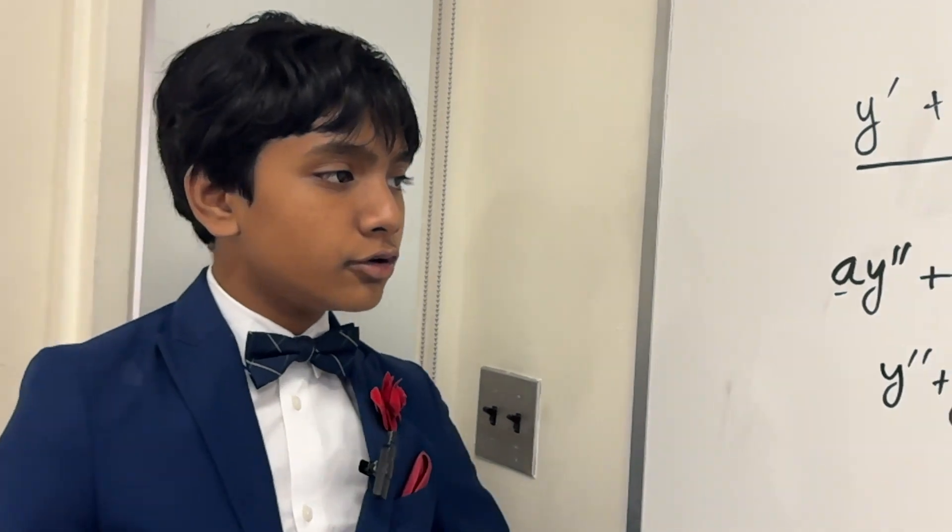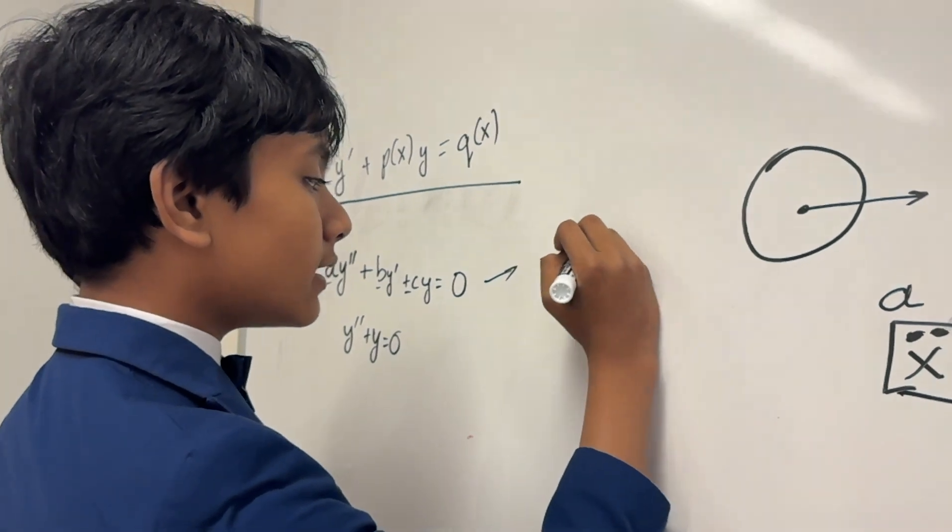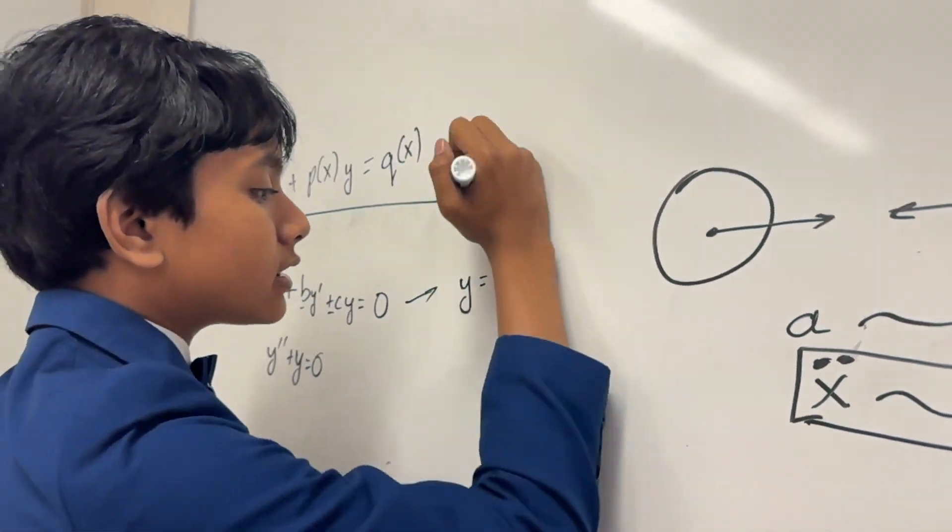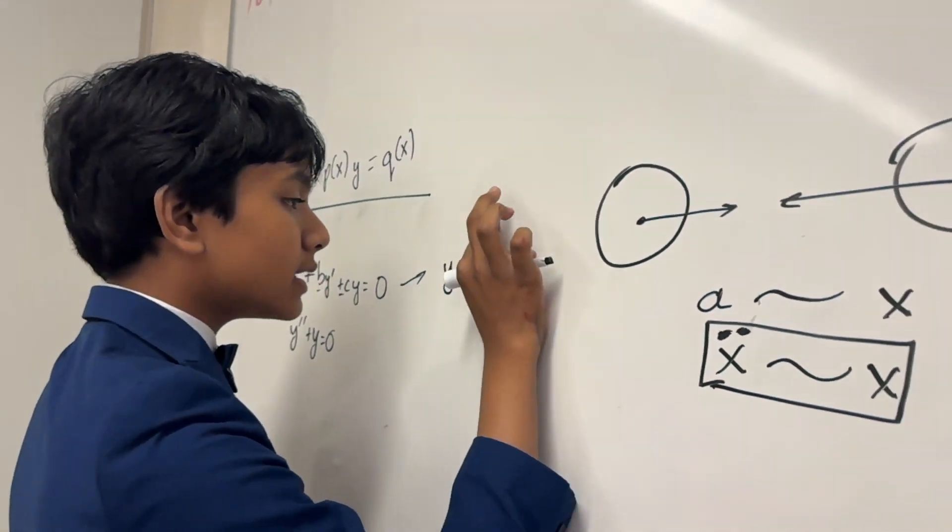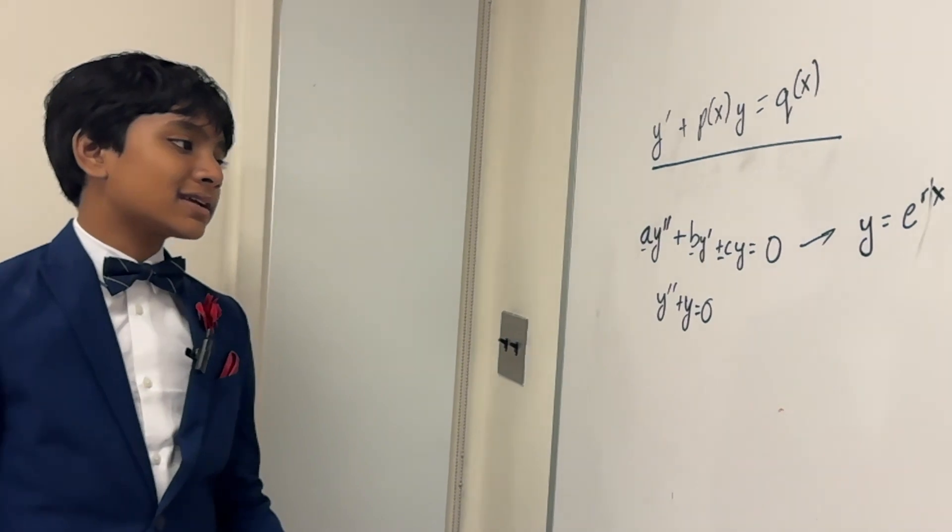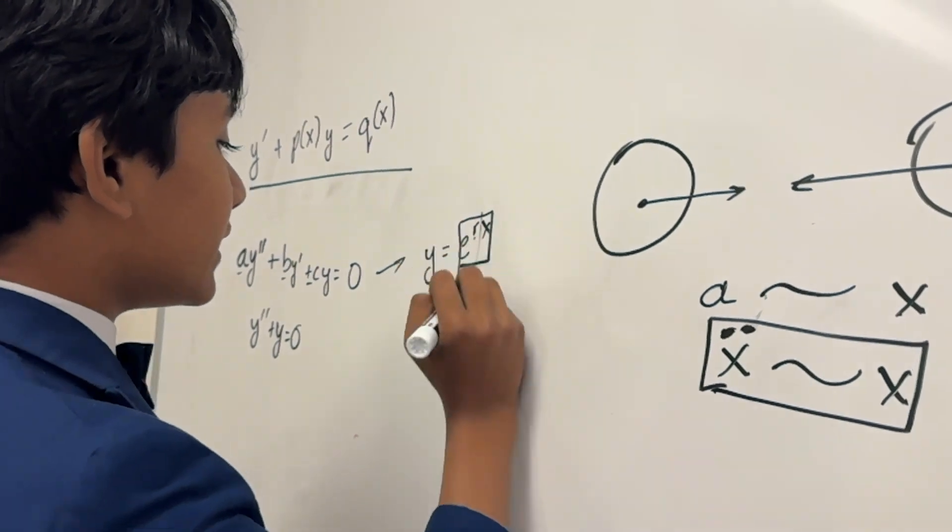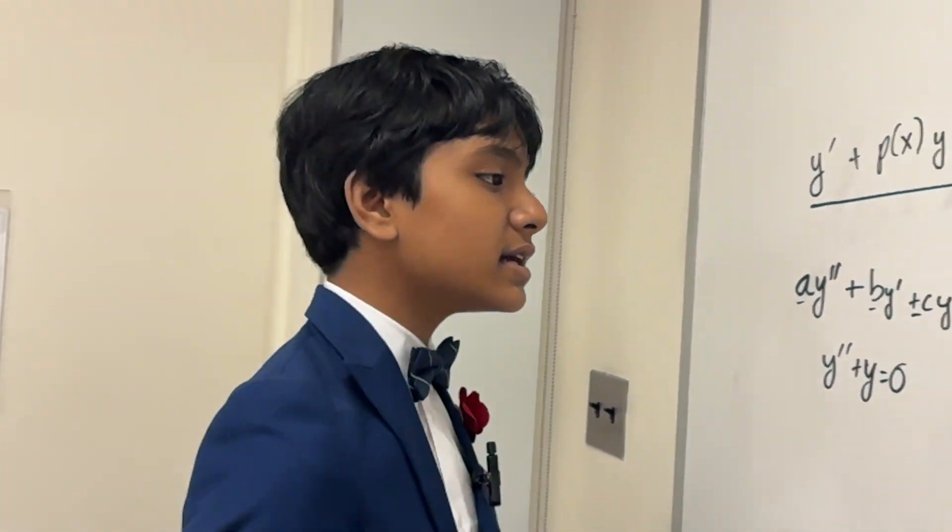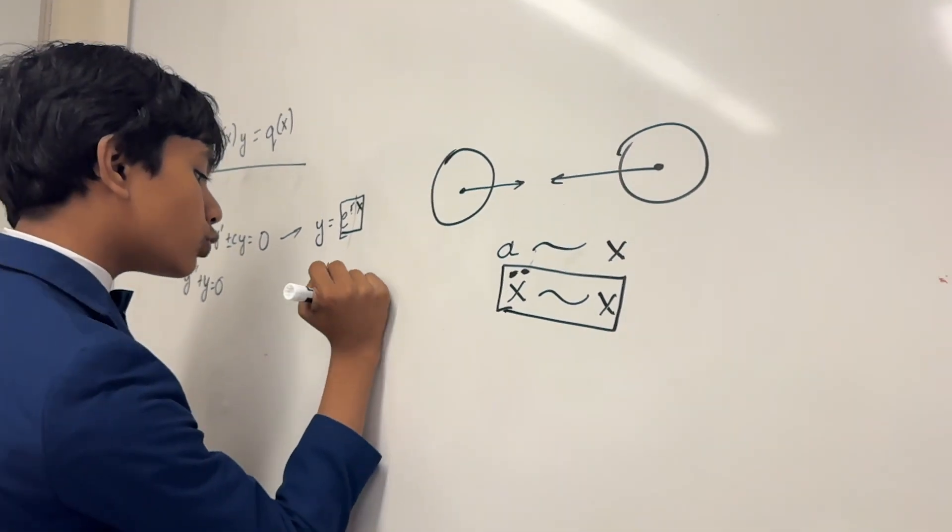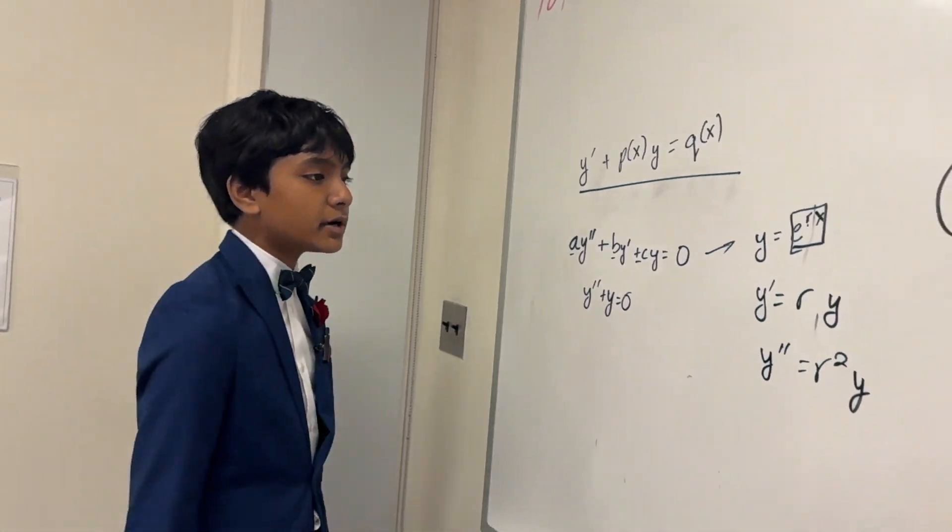Here's what we want to do. Essentially, for these ones, the only kind of solution that we can have is y equals e to the something, most often a constant, like r, times our variable, which I realize we're using x instead of t now. So y equals e to the rx, for example. And why is that? Well, it's because it's very convenient for us to use e to the power of some things because y prime is just going to be equal to that constant times y, and y double prime is equal to that constant squared times y.